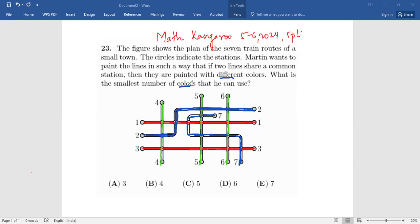So what is the smallest number of colors that he can use? He can use three different colors to do this. So the answer is option A.